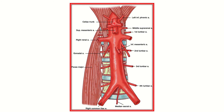The anterior branches include: first, the celiac trunk; then the superior mesenteric artery; then the inferior mesenteric artery. So anteriorly there are three branches — celiac trunk, superior mesenteric artery, and inferior mesenteric artery. The two terminal branches are the right common iliac artery and left common iliac artery. So anteriorly three arteries, and terminally two arteries.